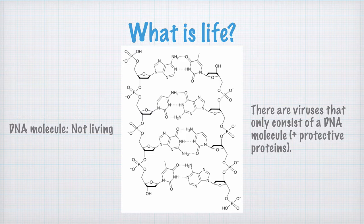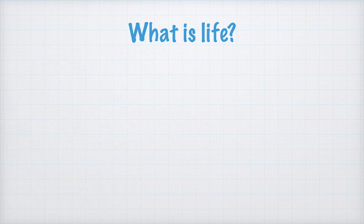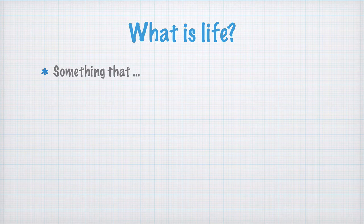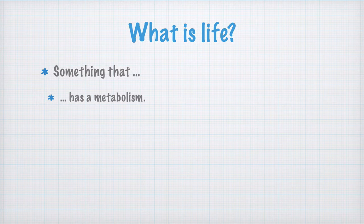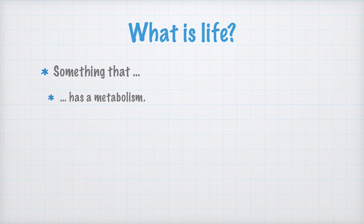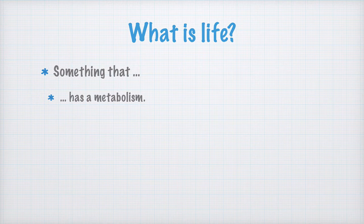So, what is actually alive and kicking? Well, for something to be alive, it has to fulfill a few criteria. First of all, it has to have a metabolism. This means it takes up molecules from its surroundings, processes them, and uses them or rebuilds them for its own purposes.